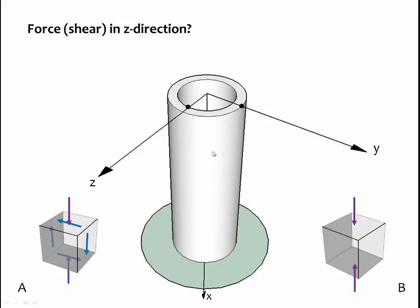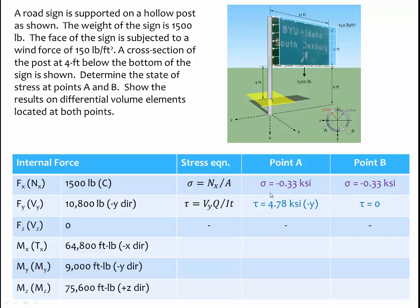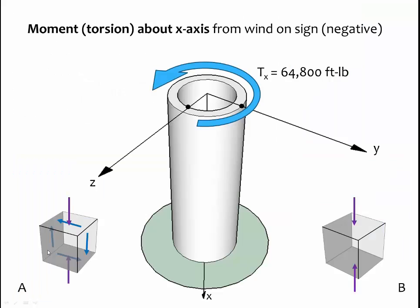Now let's consider the shear force in the z direction — we found there was none. So there is no shear stress acting at either point A or B in the z direction. We have considered our three forces. Now let's consider the three moments, beginning with the torque about the x-axis. We have a torque about the x-axis equal to 64,800 foot-pounds.